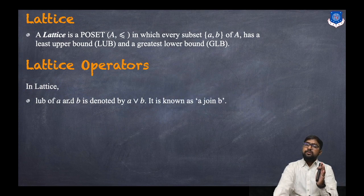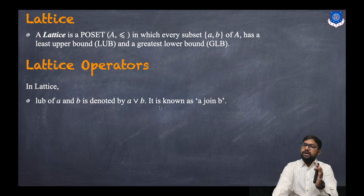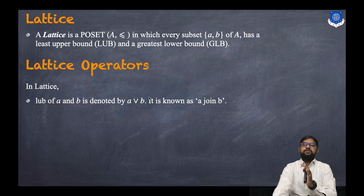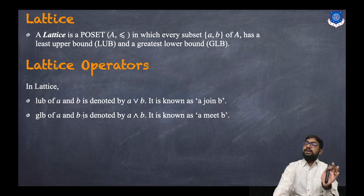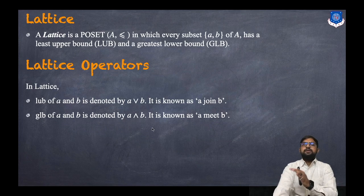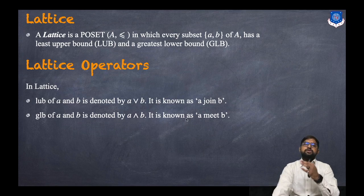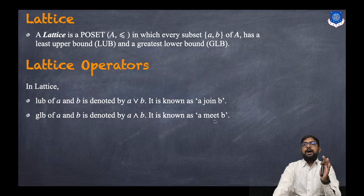Now, what are the lattice operators? The LUB of a and b is denoted by a ∨ b, known as 'a join b.' The GLB of a and b is denoted by a ∧ b, known as 'a meet b.' So a join b means LUB and a meet b means GLB.